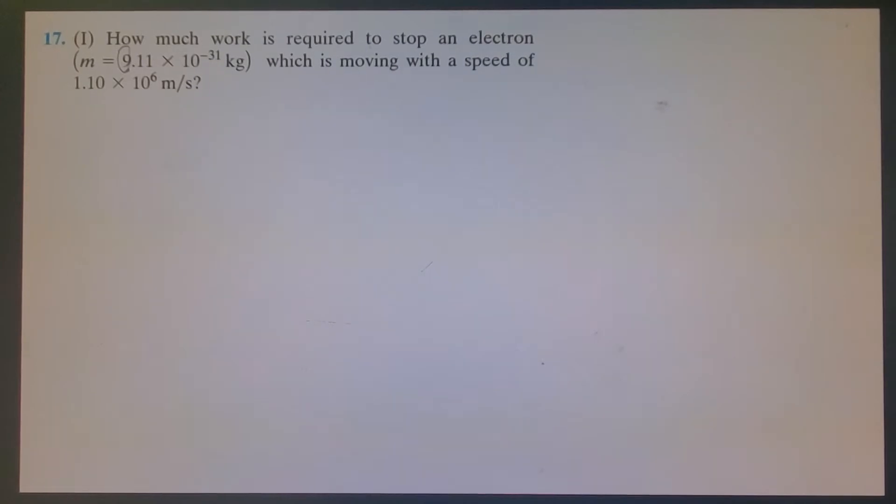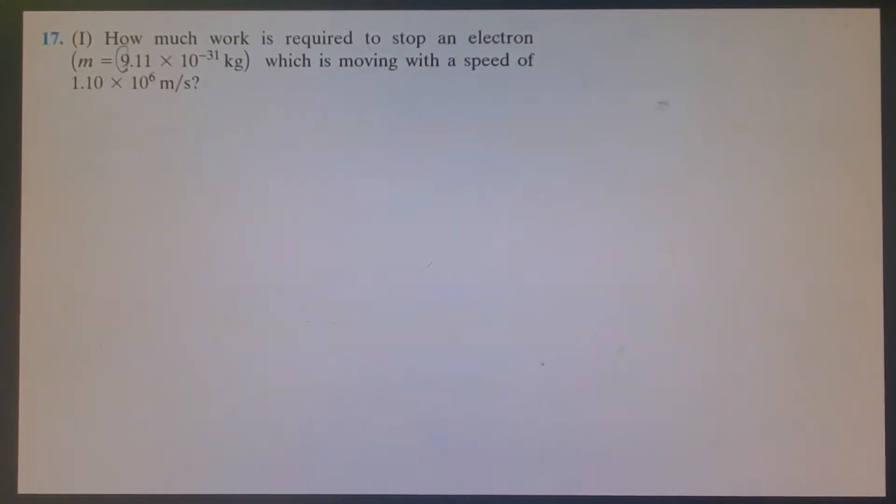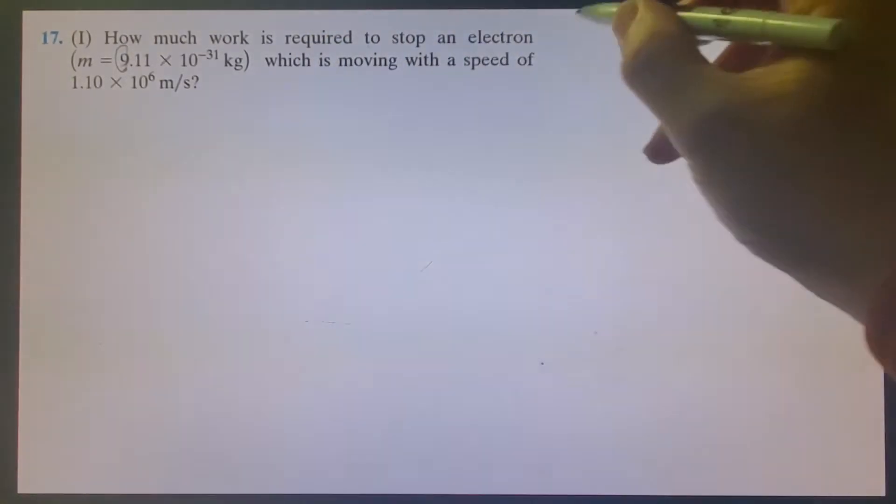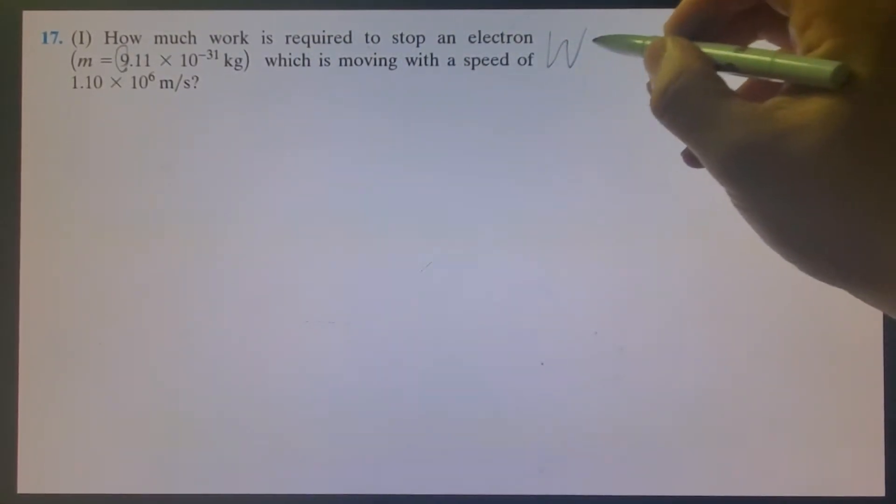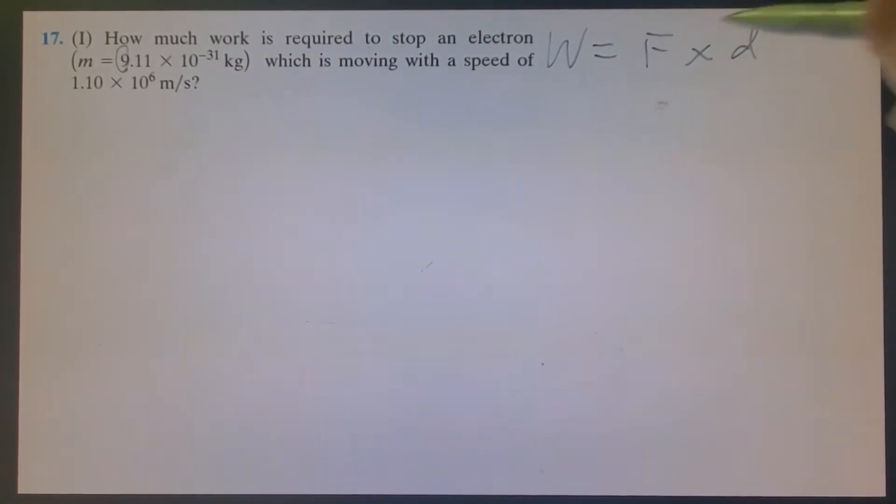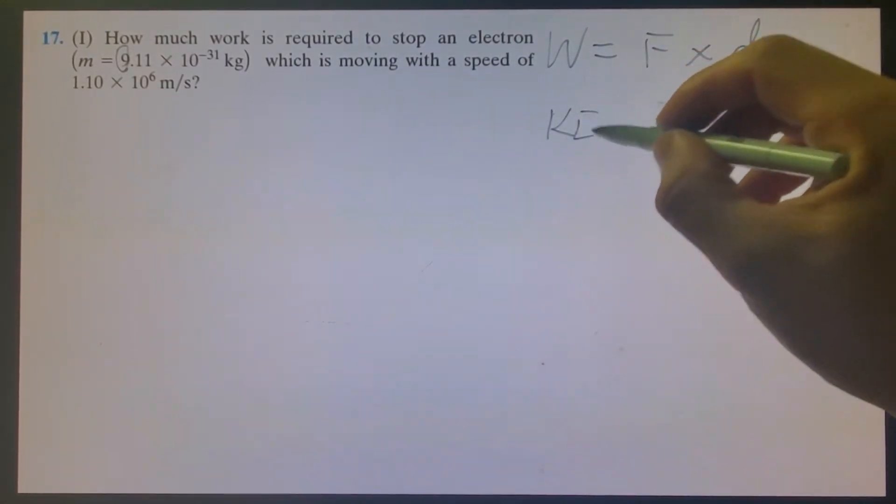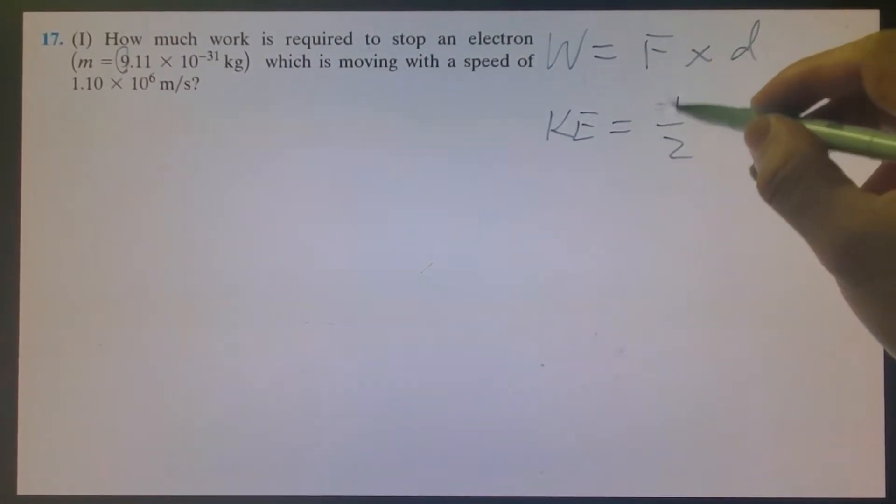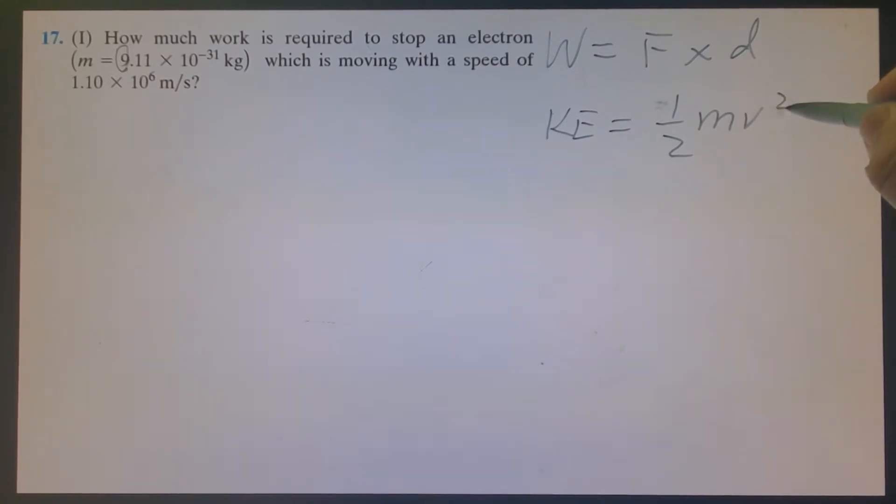So far we have talked about two types of energy. One is called work, that's the mechanical energy. The other one is called kinetic energy. Let me do a review. Work is equal to force times distance, if it's linear, moving in the direction of the force. Kinetic energy is equal to half mv squared.